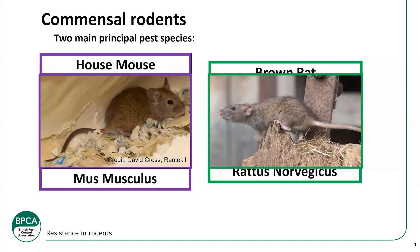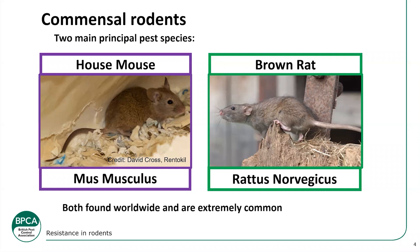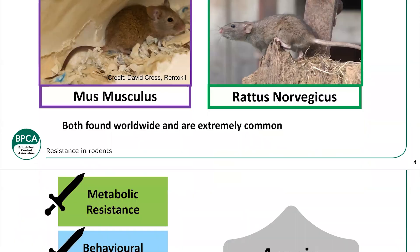We're mainly going to talk about two species of rodents today: the house mouse and the brown rat. These are commensal rodents, which basically means they rely on us to survive — they feed off man's plate, using us for food, water, and harbourage. These are the two main species we're going to discuss.